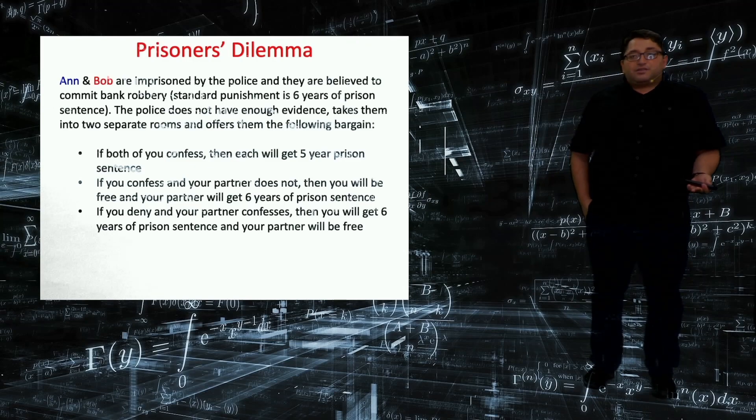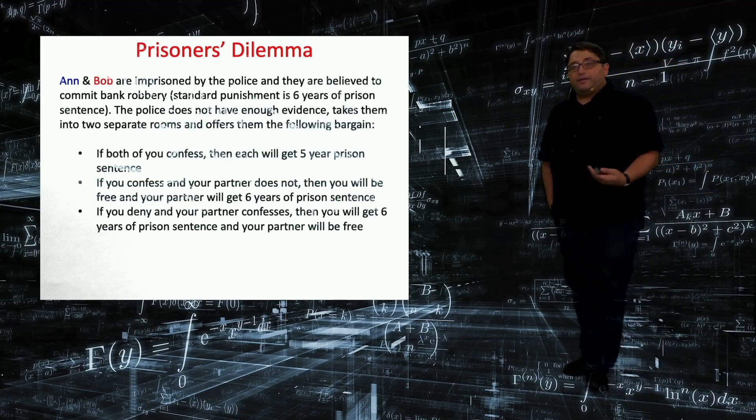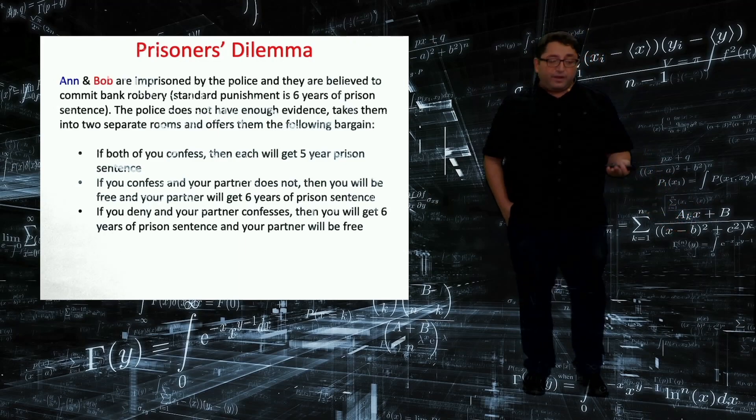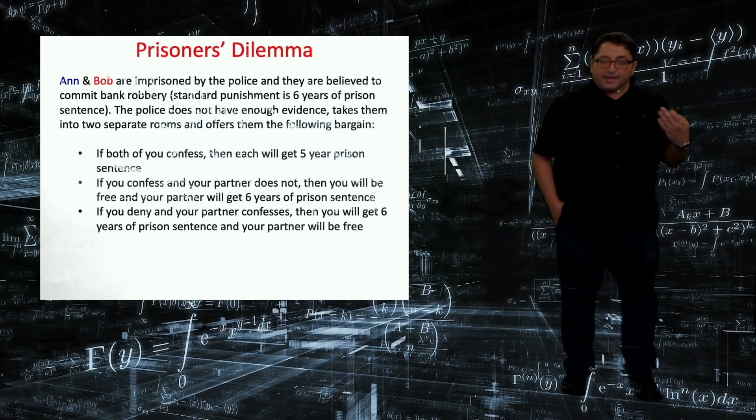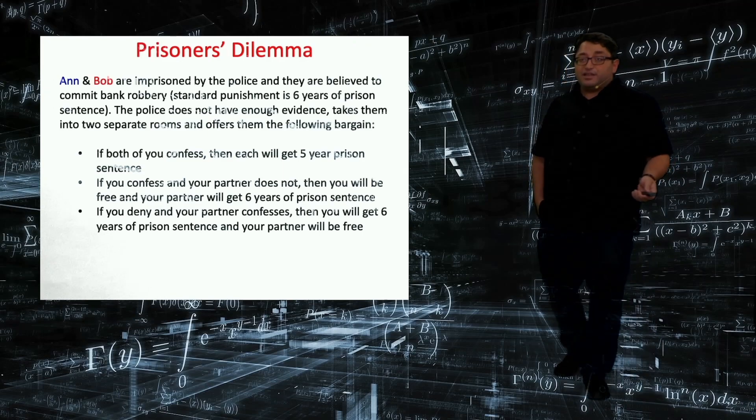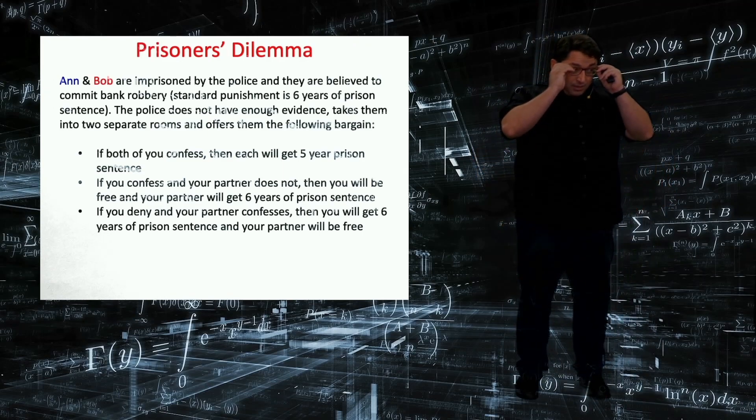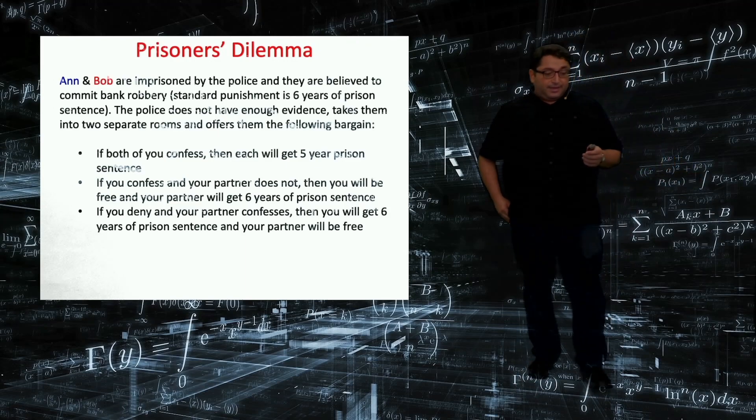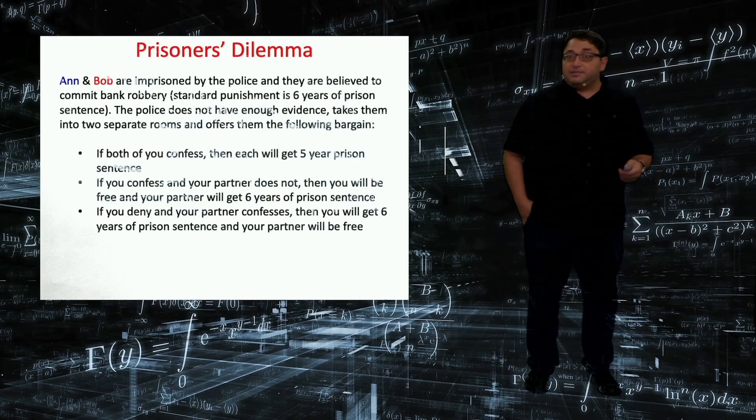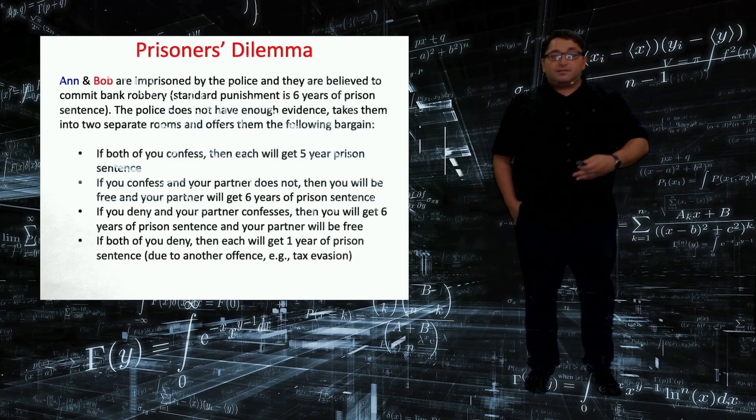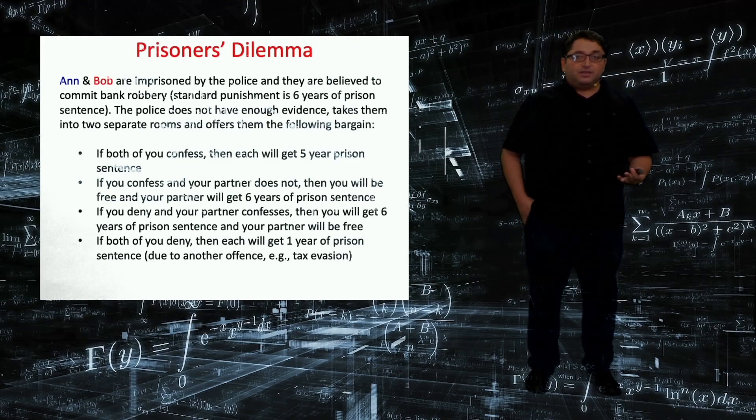So the only other possible outcome would be, what if both of them denies? Then, unfortunately, they are not going to be free, but the police is going to sentence them with another crime, lighter sentence, say tax evasion, and they will spend one year. So this is a simultaneous game because they cannot communicate. They don't know what their partner is taking which action.